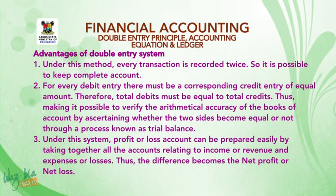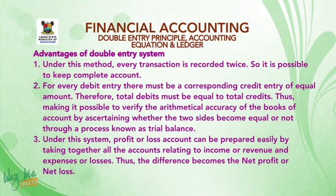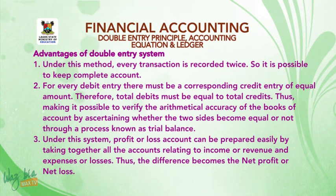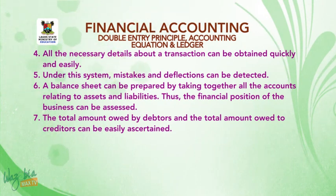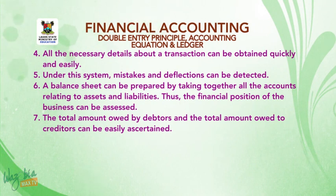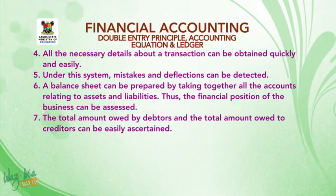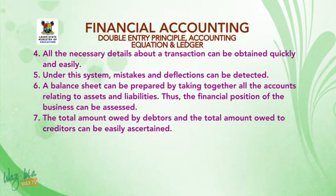Number three, under this system, profit or loss account can be prepared easily by taking together all the accounts relating to income or revenue and expenses or losses. Thus the difference becomes the net profit or net loss. Number four, mistakes and deflections can be detected. Number six, a balance sheet can be prepared by taking together all accounts relating to assets and liabilities, thus the financial position of the business can be assessed. Number seven, the total amount owed by debtors and the total amount owed to creditors can be easily ascertained.